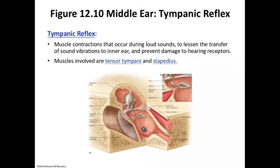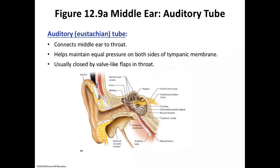The tympanic reflex reduces pressure from loud sounds to ensure that damage does not occur to our hearing receptors. Ordinary vocal sounds also elicit the tympanic reflex, such as when a person speaks or sings. Next is the auditory tube, also known as the Eustachian tube. The Eustachian tube connects the middle ear to the throat.